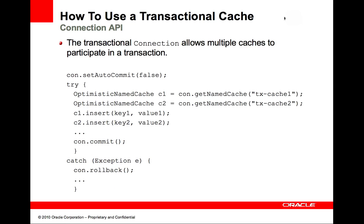Here we see how to use multiple Coherence caches in a single transaction. Notice that we obtain two caches and do an insert on each in the context of a transaction. This means that both of the inserts will be committed together when the transaction commits, or both will be rolled back in the event of an exception.